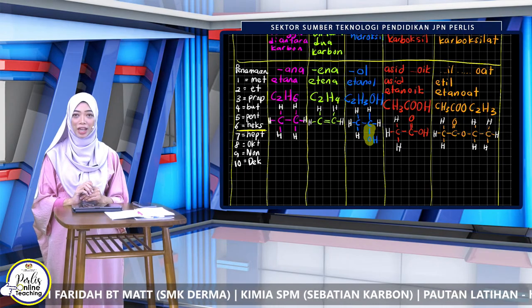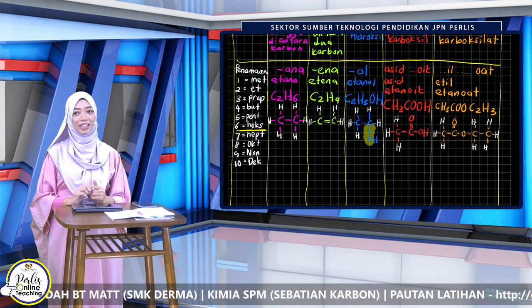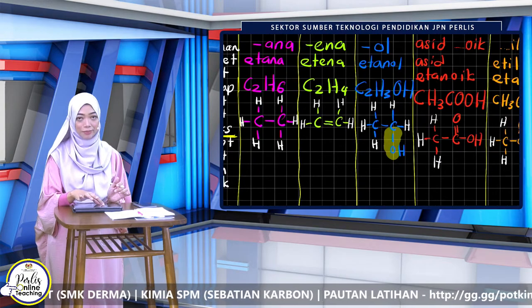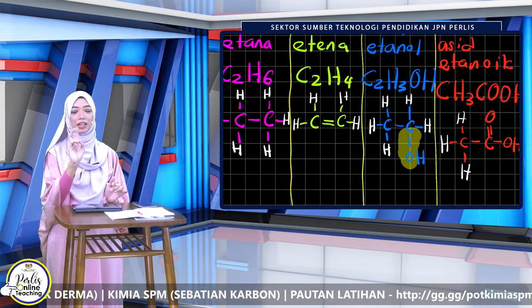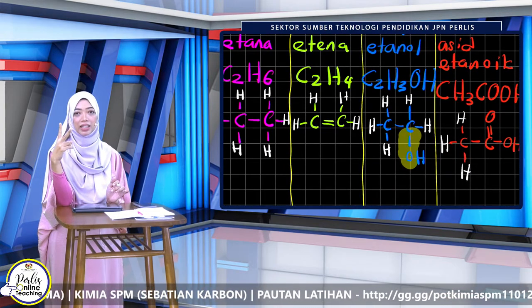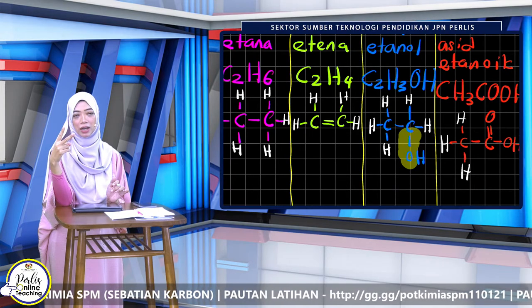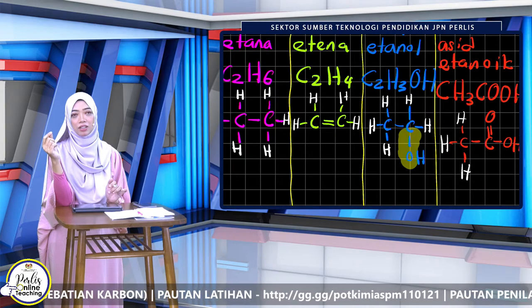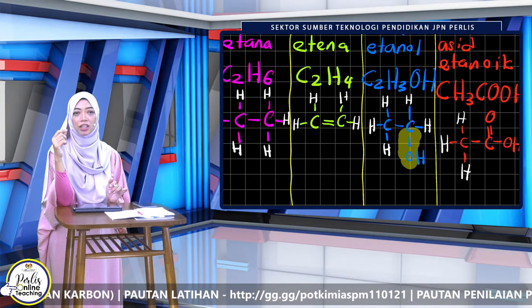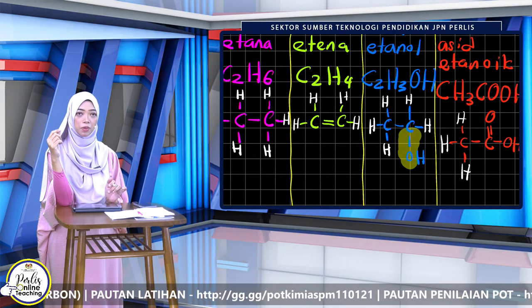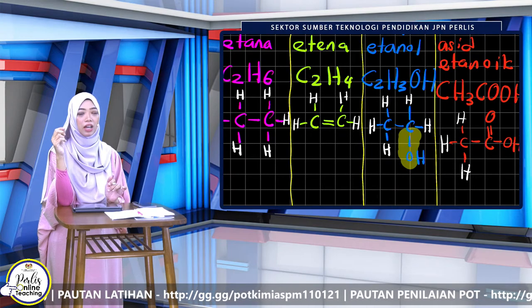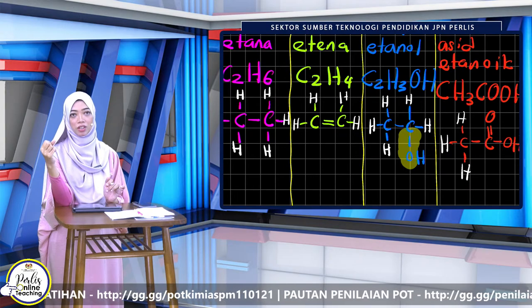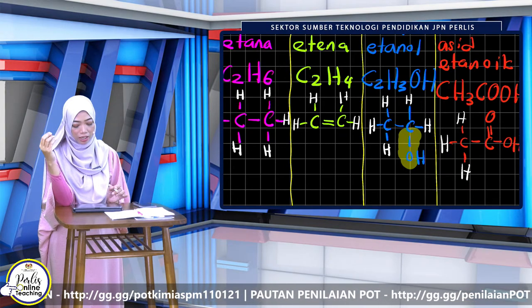Kalau alkena, selepas kita lukis karbon, contoh etena: 'et' bermaksud dua, karbon dia dua. Lukis dua C, kemudian lukis kumpulan berfungsi dia iaitu ikatan ganda dua atau double bond. Barulah awak tentukan berapa lagi ikatan yang diperlukan untuk karbon tersebut, dan kemudian masukkan hidrogen.